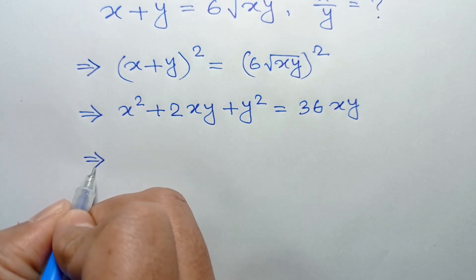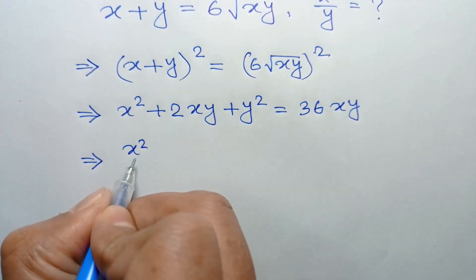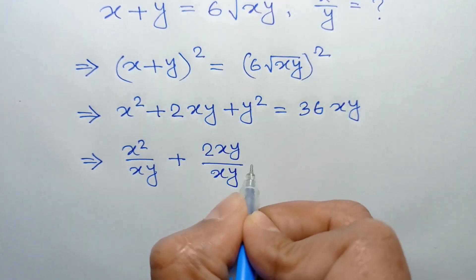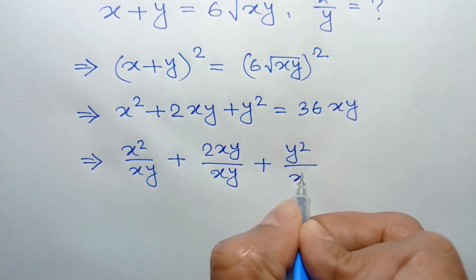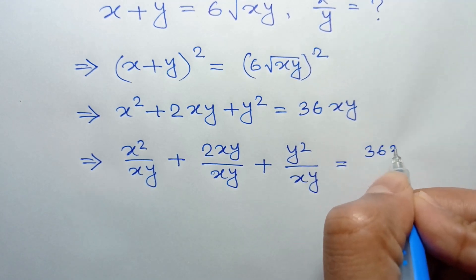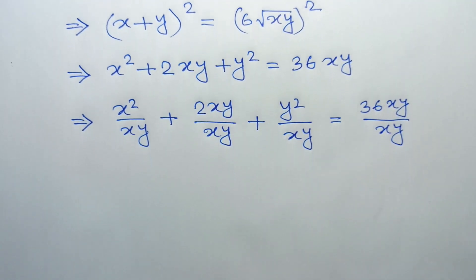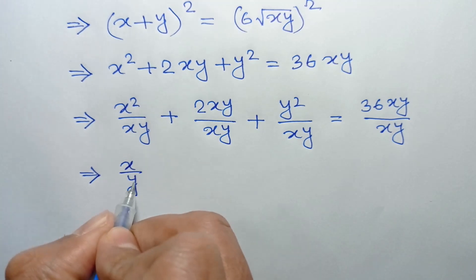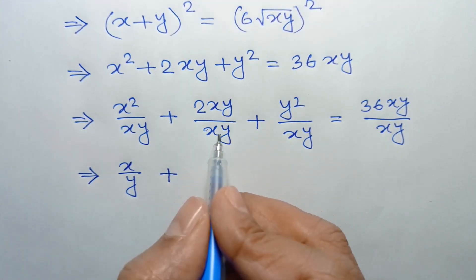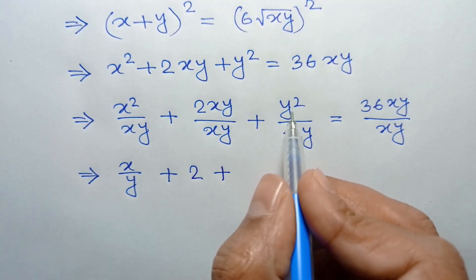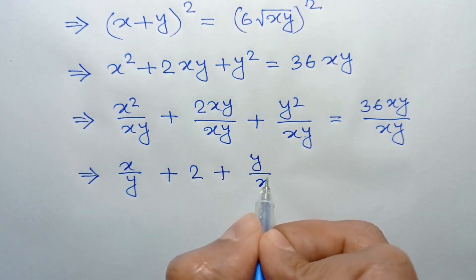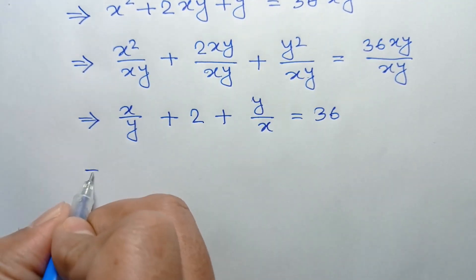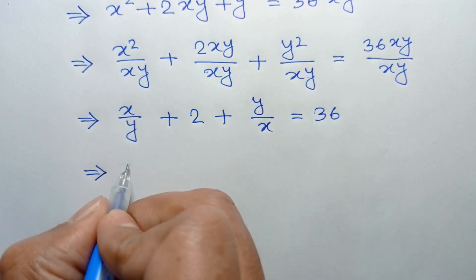Now dividing both sides by xy, we can write x square over xy plus twice xy over xy plus y square over xy is equal to 36 xy over xy. So x square over xy simplifies to x over y, the middle term 2xy over xy cancels to 2, and y square over xy simplifies to y over x.